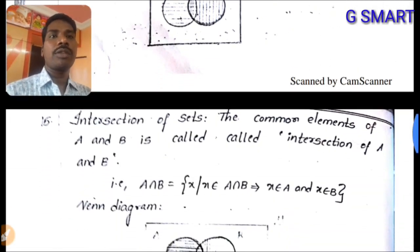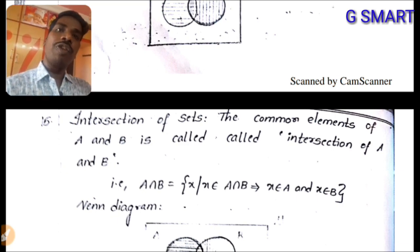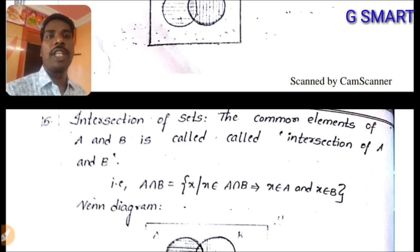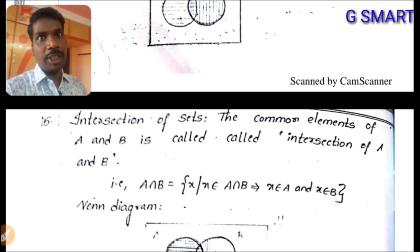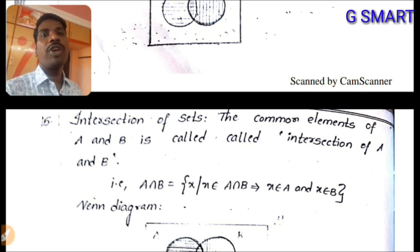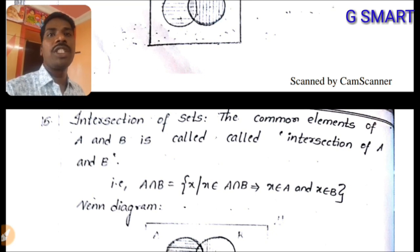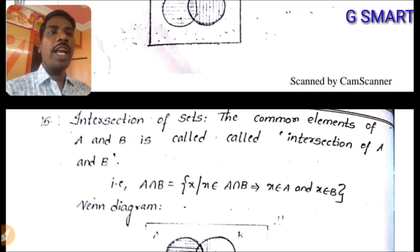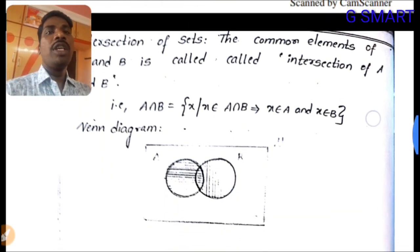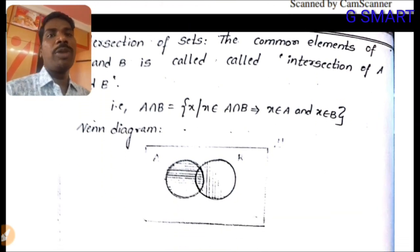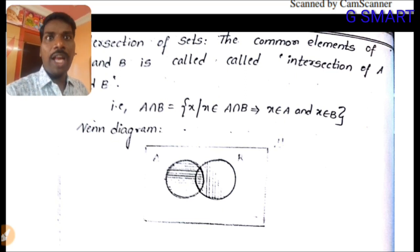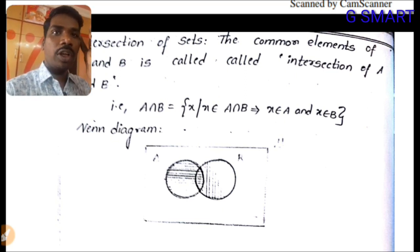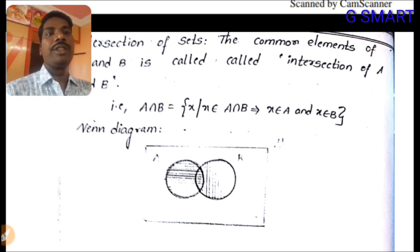Intersection of sets: the common elements of A and B is called the intersection of sets. A ∩ B = {x : x ∈ A and x ∈ B}. In the Venn diagram, only the overlapping region (where both circles meet) is shaded.